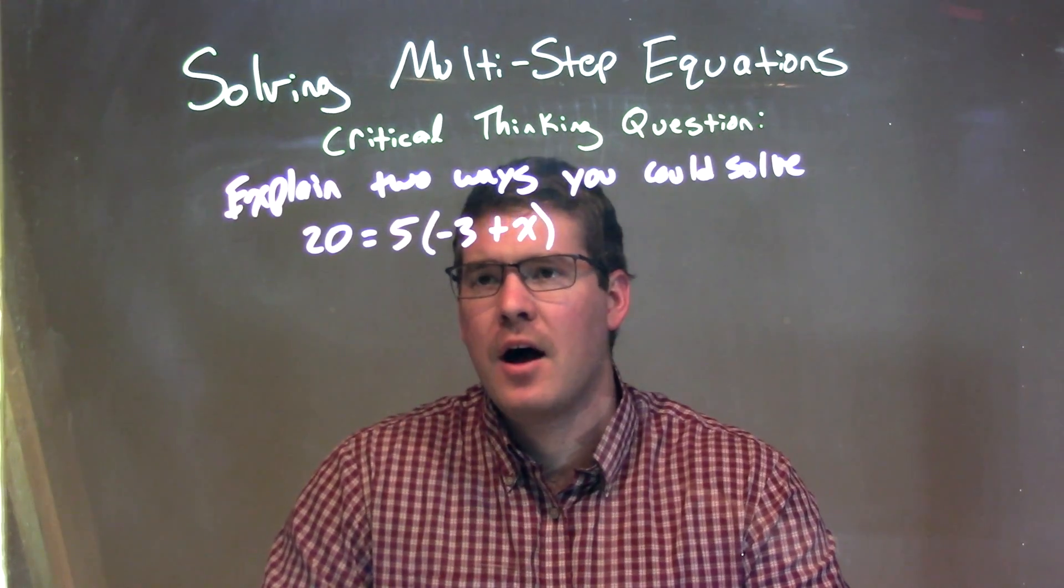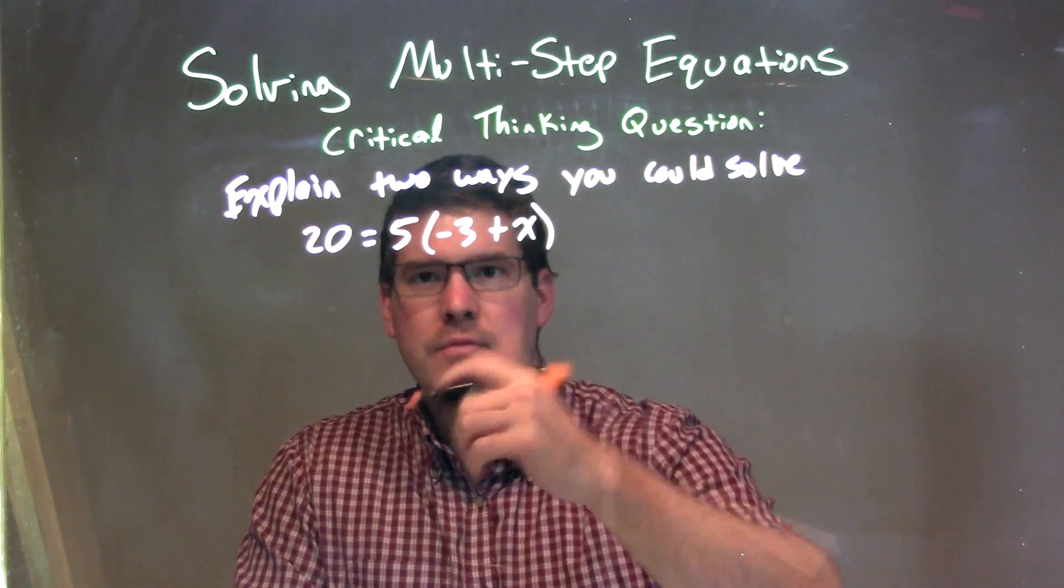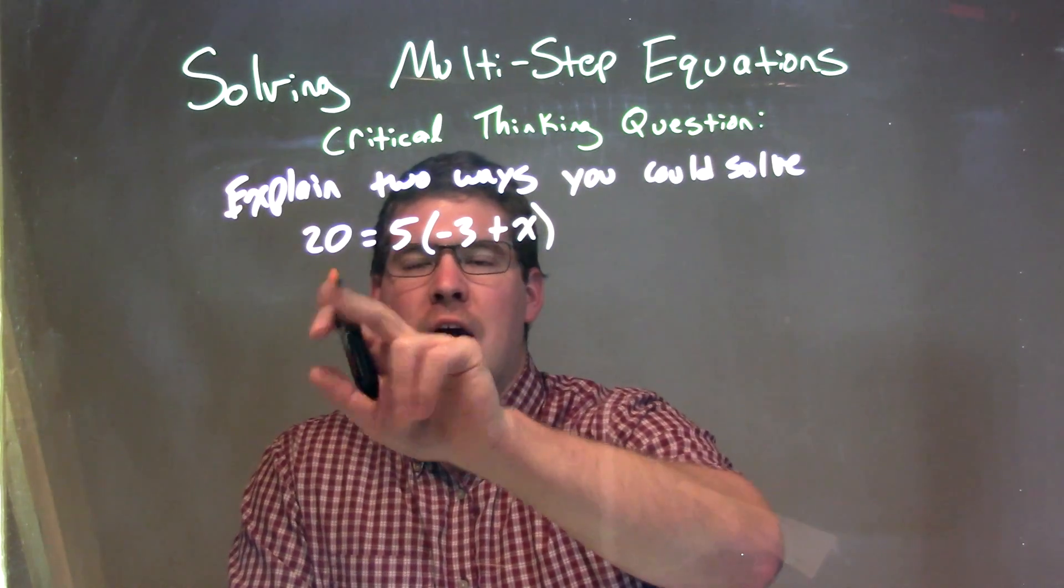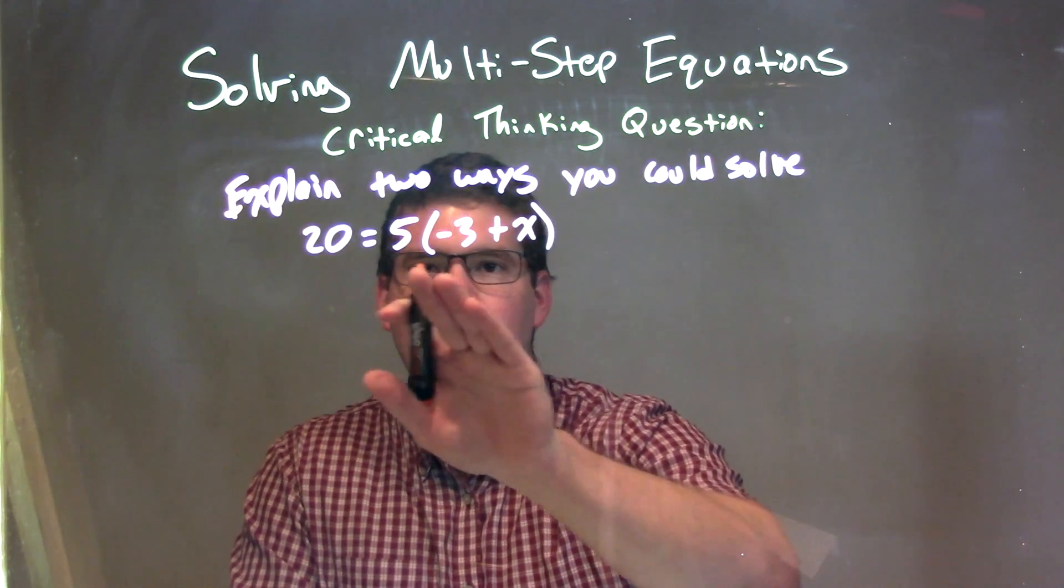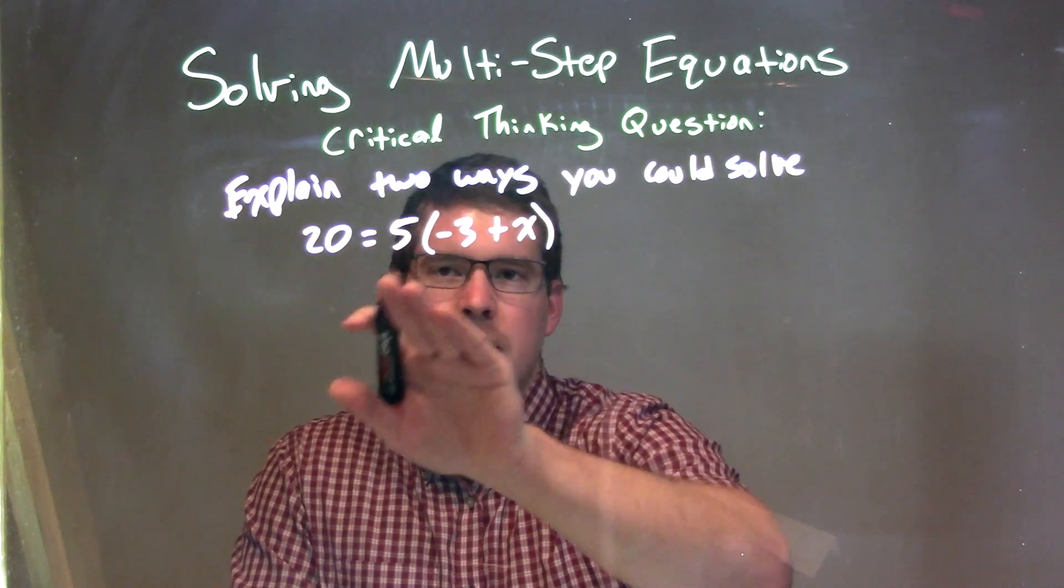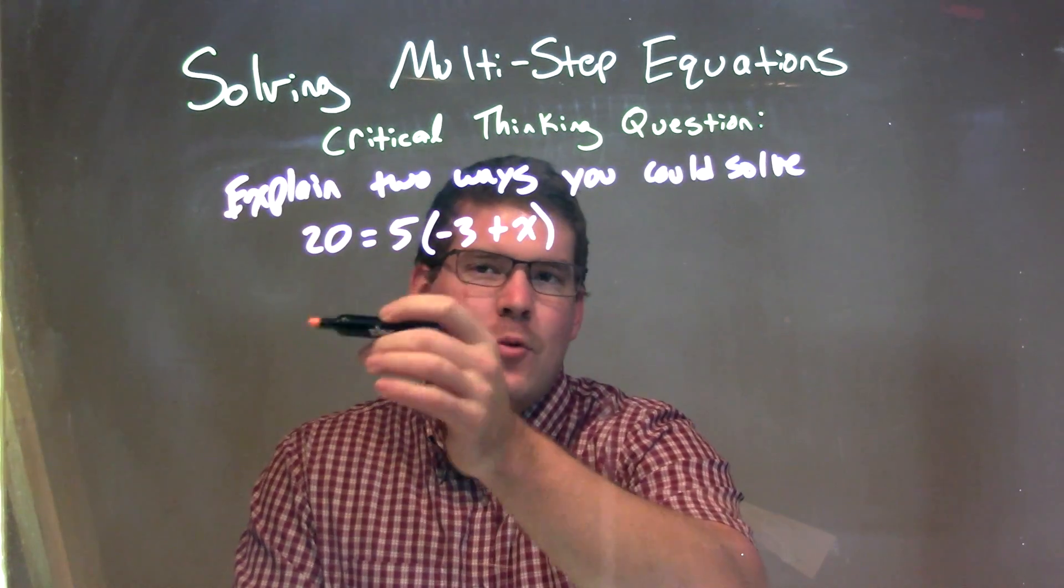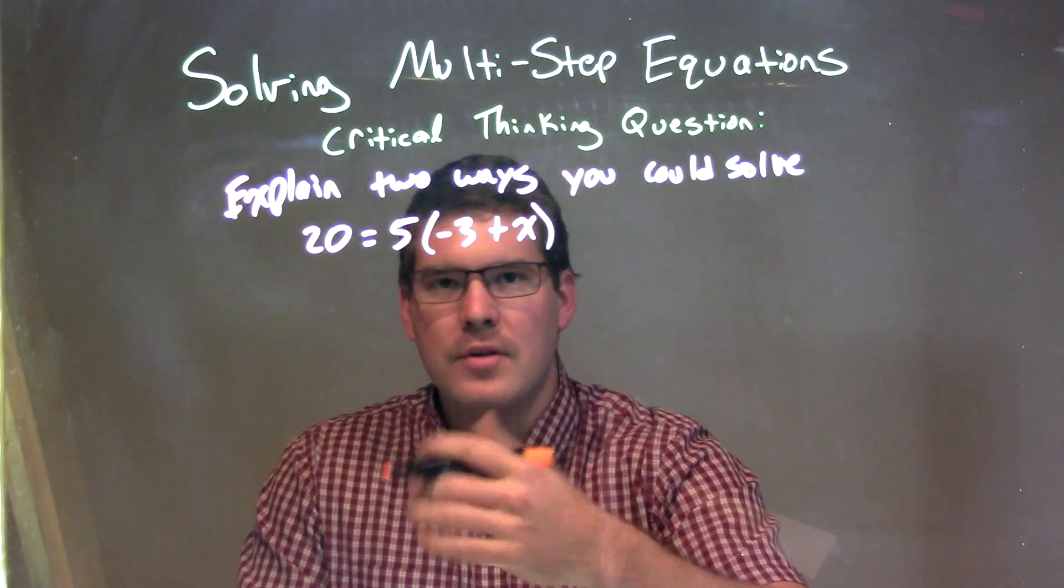Well, the two ways that I'm thinking is I can either, first scenario, divide by 5 to both sides first. So by dividing 5 to both sides, get rid of that parentheses, and I'm left with 4 = -3 + x, and then add 3 to both sides.